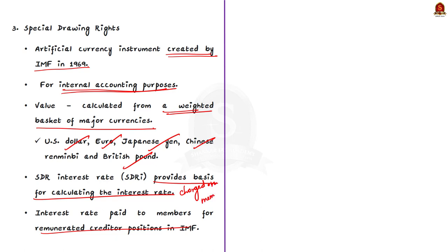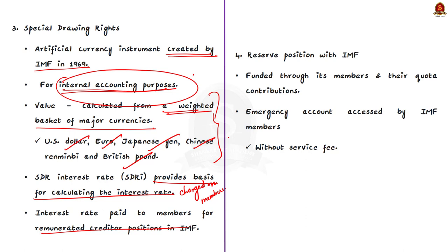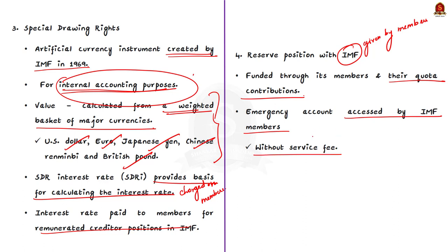The IMF is funded through its members' quota contributions. The reserve tranche is an emergency account that IMF members can access at any time without agreeing to conditions or paying a service fee. In other words, a portion of a member country's quota can be withdrawn free of charge at its own discretion. When a member country has an emergency situation, they can access that money — and that is what the reserve tranche represents.